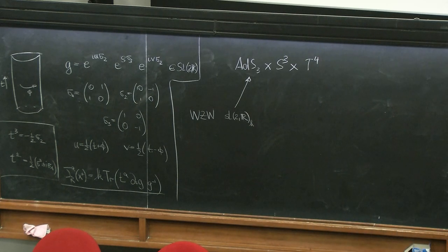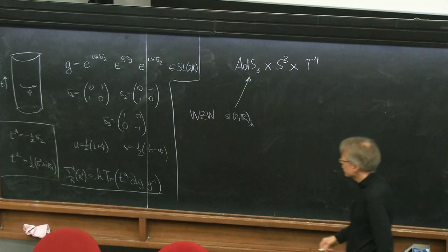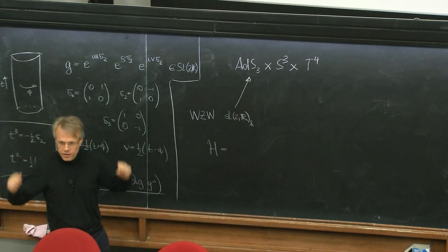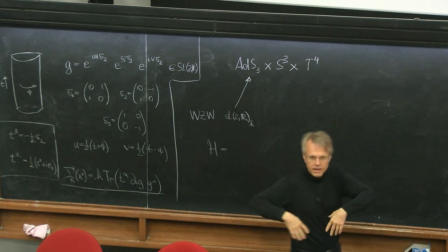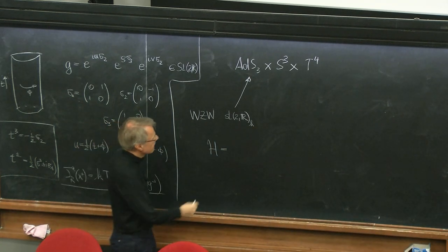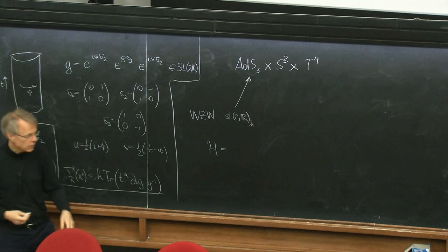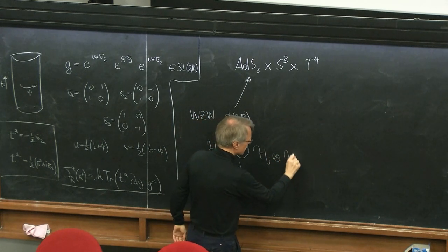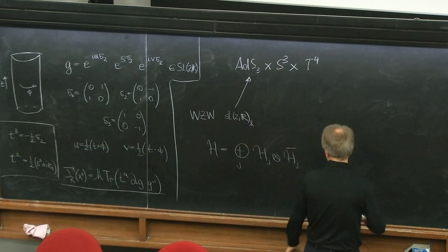Instead of trying to describe all classical solutions, given that this theory has this enormous symmetry, we can use this as a way of organizing the space of states. The space of physical excitations — it's not a Hilbert space, not positive definite — must organize itself in terms of representations of this affine Kac-Moody algebra, both left-moving and right-moving versions. Schematically, it should be of the form that you have some representation on the left and some representation on the right. You would naively expect these to be highest-weight representations.